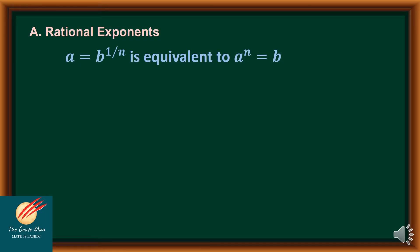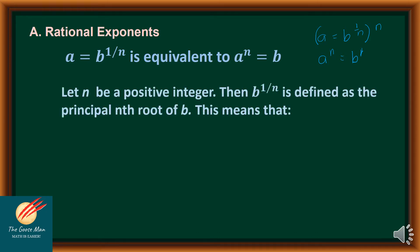On rational exponents, let's have the expression a = b raised to 1 over n. If we raise both sides of the equation to n, we resolve to a raised to n = b raised to 1, or simply a raised to n = b. Similarly, let n be a positive integer; then b raised to 1 over n is defined as the principal nth root of b.